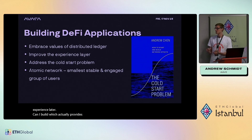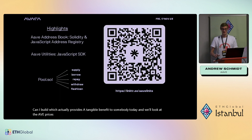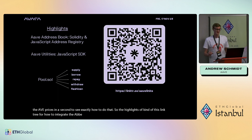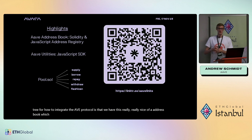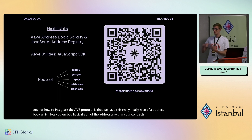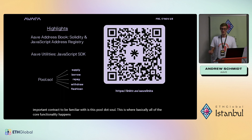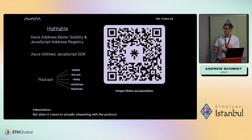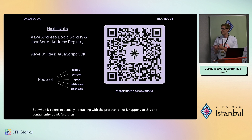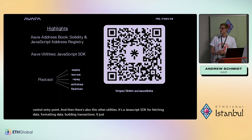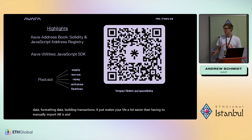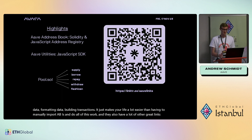Focus on the experience layer: what can you build that provides a tangible benefit to somebody today? For integrating the Aave protocol, there's the Aave address book which lets you embed all addresses within your contracts. The most important contract is pool.sol — the central hub for all core functionality. There's also Aave Utilities, a JavaScript SDK for fetching data, formatting data, and building transactions, making it much easier than manually importing ABIs.